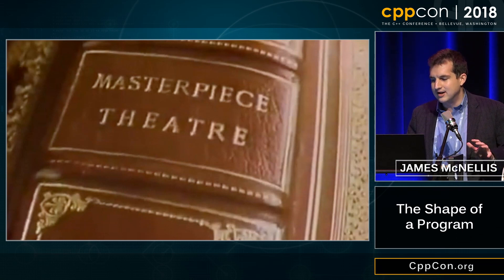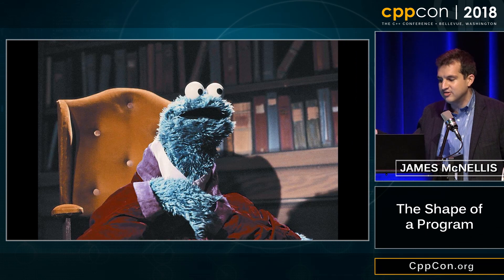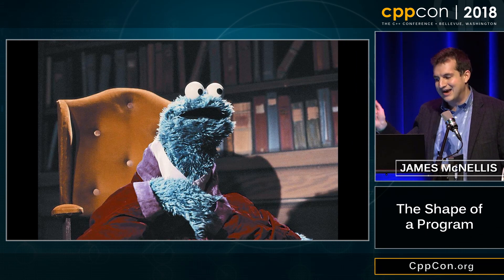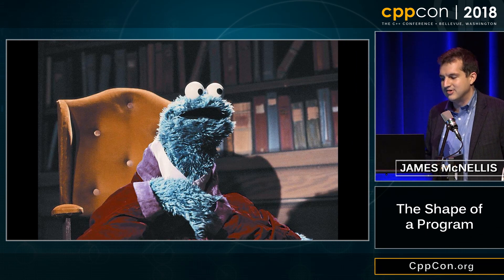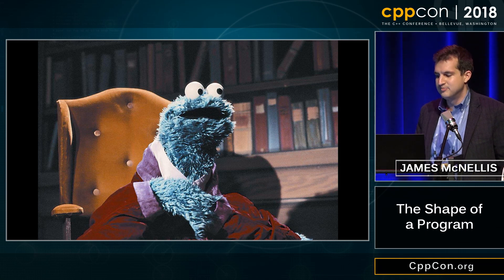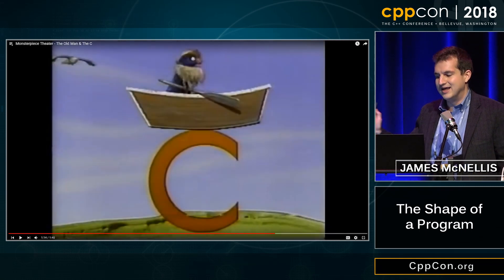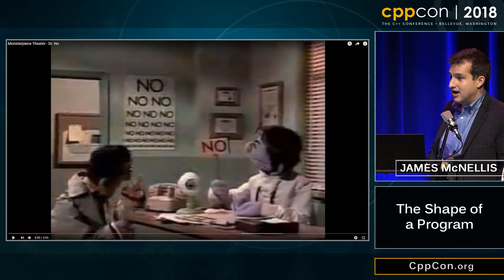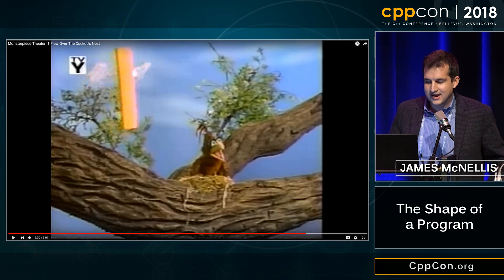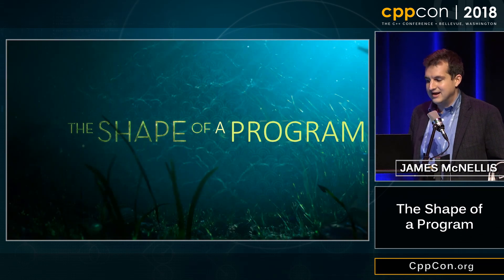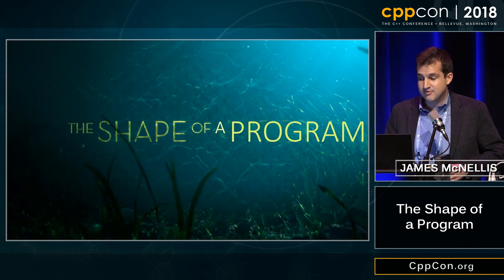That's actually not important, except that it reminded me of Monsterpiece Theater, which is a Sesame Street skit in which Alistair Cookie presents adaptations based on just the titles of things — 'The Old Man and the Sea,' 'Dr. No,' 'One Flew Over the Cuckoo's Nest.' So in that vein, I present to you my lightning talk: 'The Shape of a Program.'